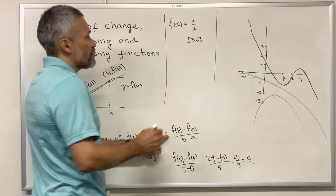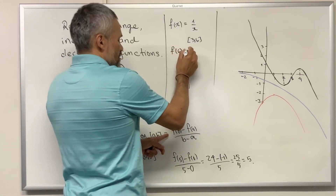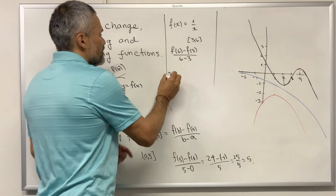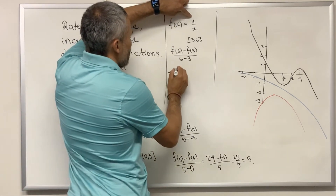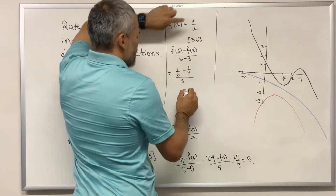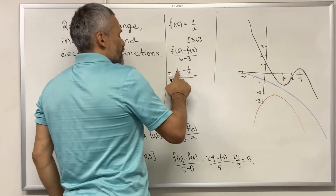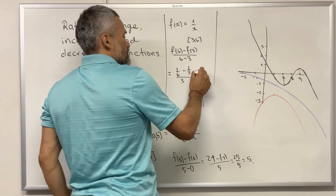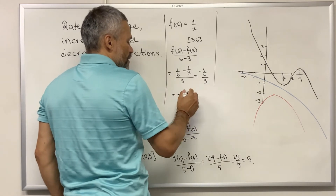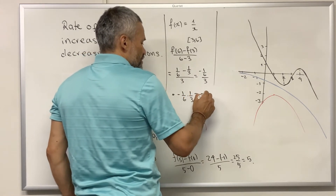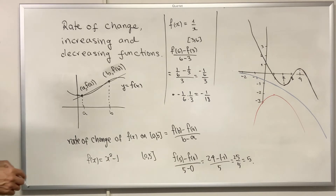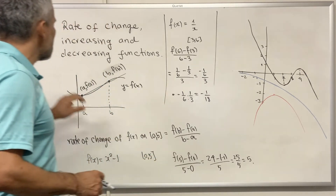By definition we need to compute f(6) minus f(3) over six minus three. f(6) is one over six, minus one over three, all over three. This is one over six minus two over six, which is negative one over six, divided by three. You do a division by multiplying by the reciprocal, and then the result is negative one over 18.